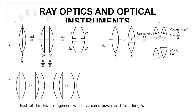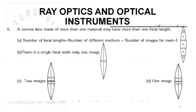For cutting of lenses: when a lens is cut longitudinally, the focal length becomes 2F for each half. When cut transversely, the focal length remains the same. If a convex lens is made of more than one material, it may have more than one focal length; the number of focal lengths equals the number of different media, which equals the number of images formed.